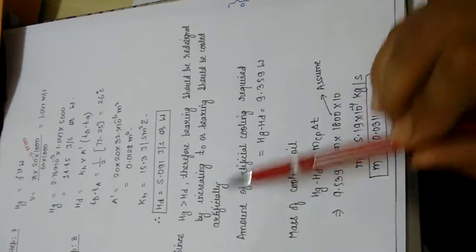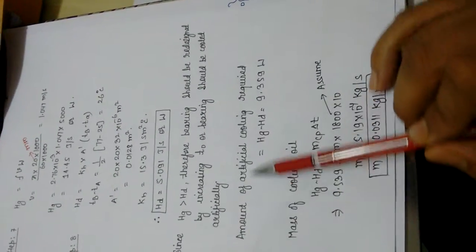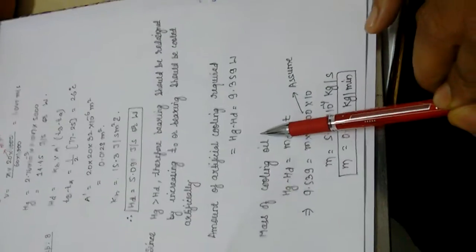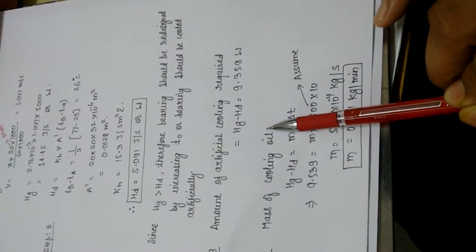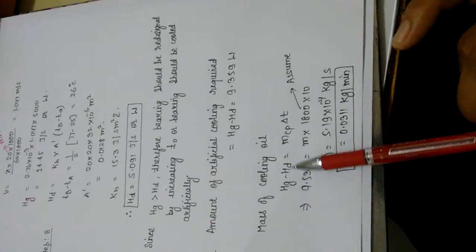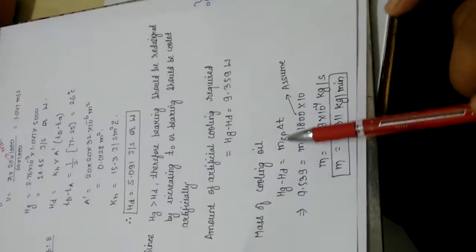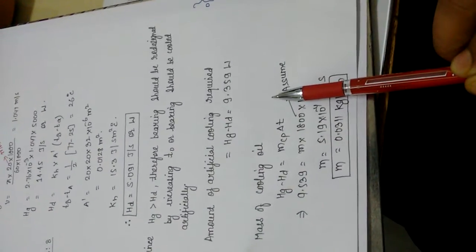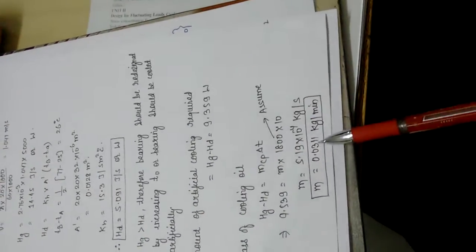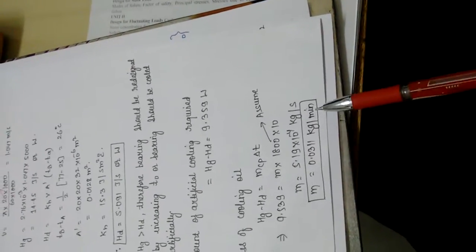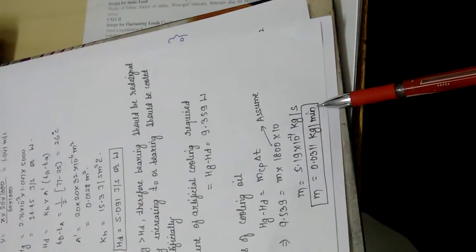Once we find the amount of artificial cooling (9.539 J/s), we must find the mass flow rate of cooling oil. Using Hg − Hd = m × Cp × ΔT, the mass of cooling oil = 0.0311 kg per minute.